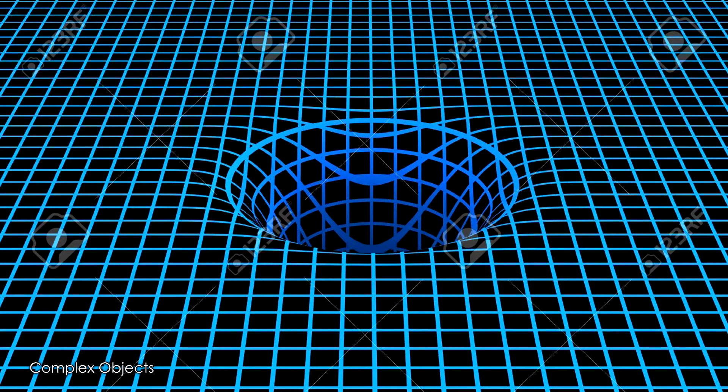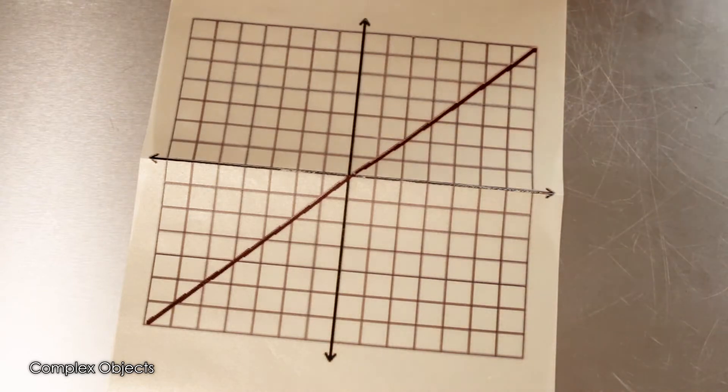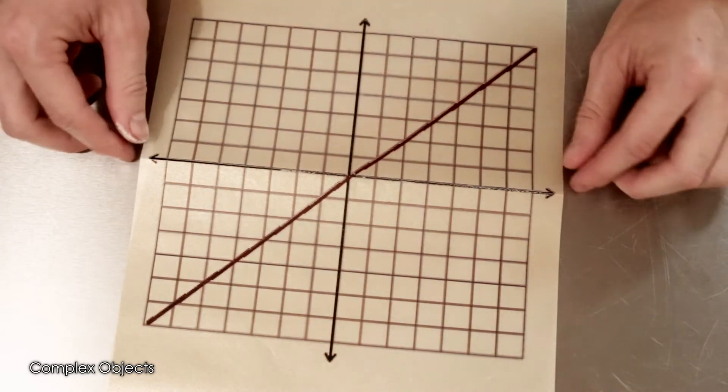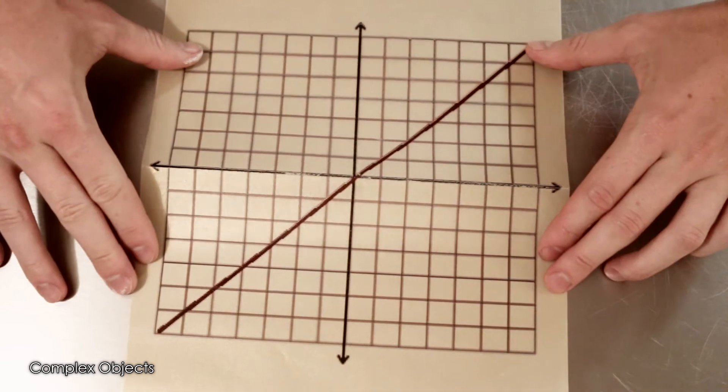So I looked at the two-dimensional case first. In this model, rays of light are going to be confined to the surface, and they're going to be moving on straight paths. And to my understanding, the straightness means that it's going to make the same angle with these grid lines at every point that it crosses.